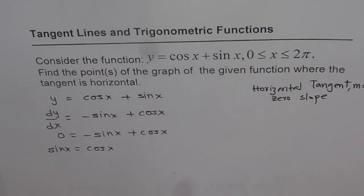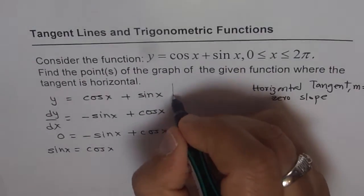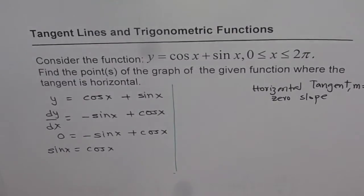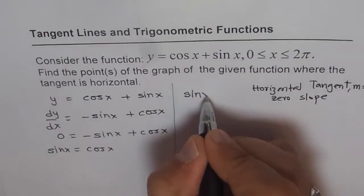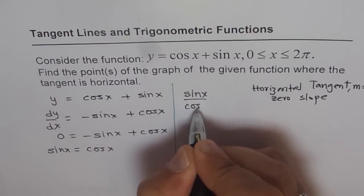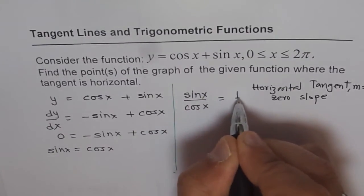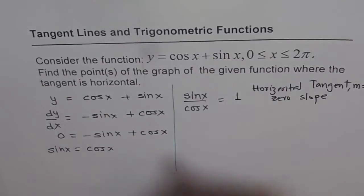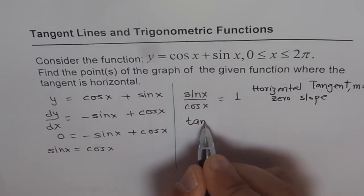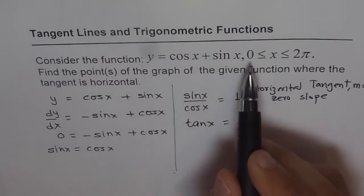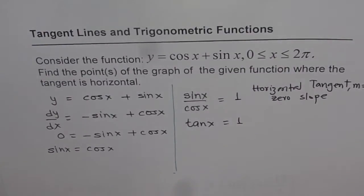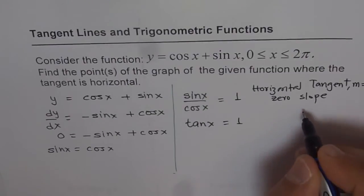Let's divide both sides by cos x and then solve for it. When I divide both sides by cos x, I get sin x over cos x equals 1, or tan x equals 1. Now when is tan x equals 1 in this domain, 0 to 2π? That is the question to be answered.